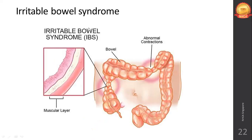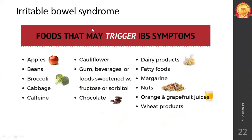Irritable bowel syndrome (IBS) involves abnormal spasms and contractions in the large intestine — not the small intestine — affecting peristaltic movement. Dietary management: achieve weight management if the patient is obese or overweight. Otherwise, a normal diet can be followed with the specific restrictions listed in the guidelines.